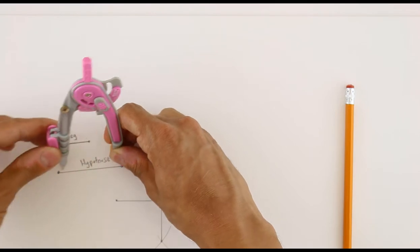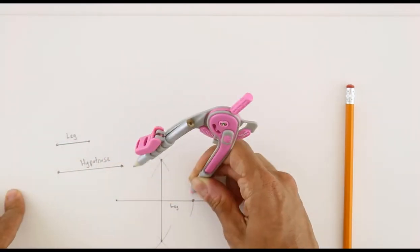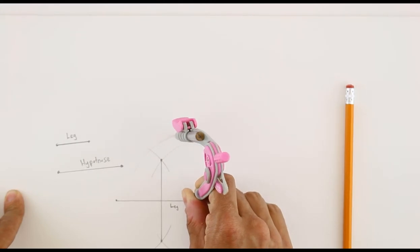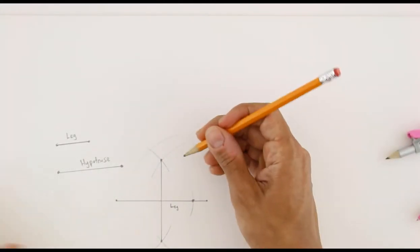Now, with the length of the hypotenuse, I can go to the new point of the new leg that I've made and create an arc for my new hypotenuse. That'll be the same.